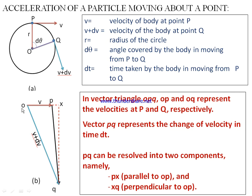This can be represented with the help of a vector polygon. The vector OP is parallel to the velocity of point P, the vector OQ represents the velocity v + dv at point Q, and the vector PQ is the change in velocity dv. This change in velocity can be resolved into two components: one along OP and the other perpendicular to OP.